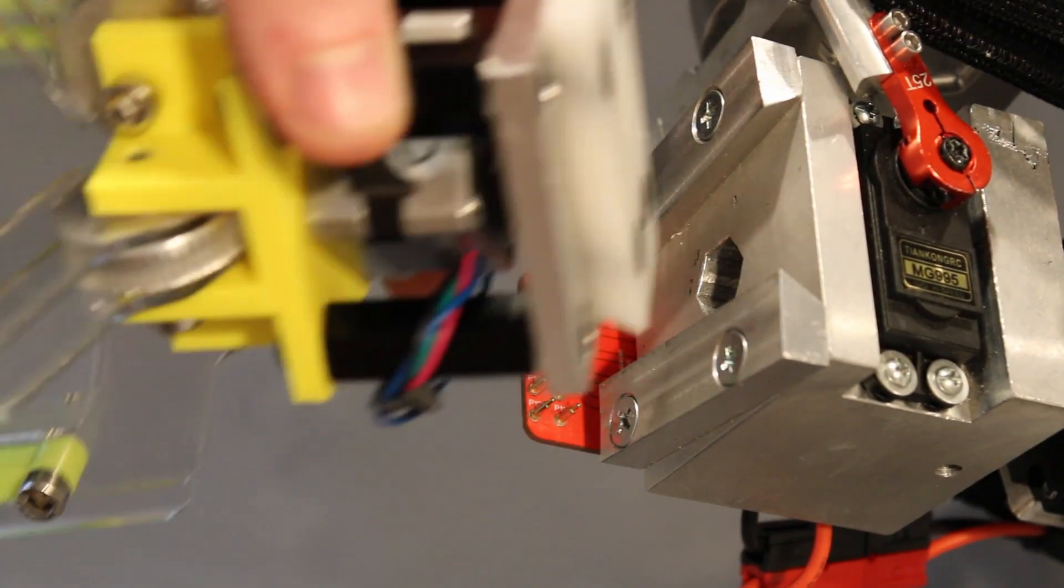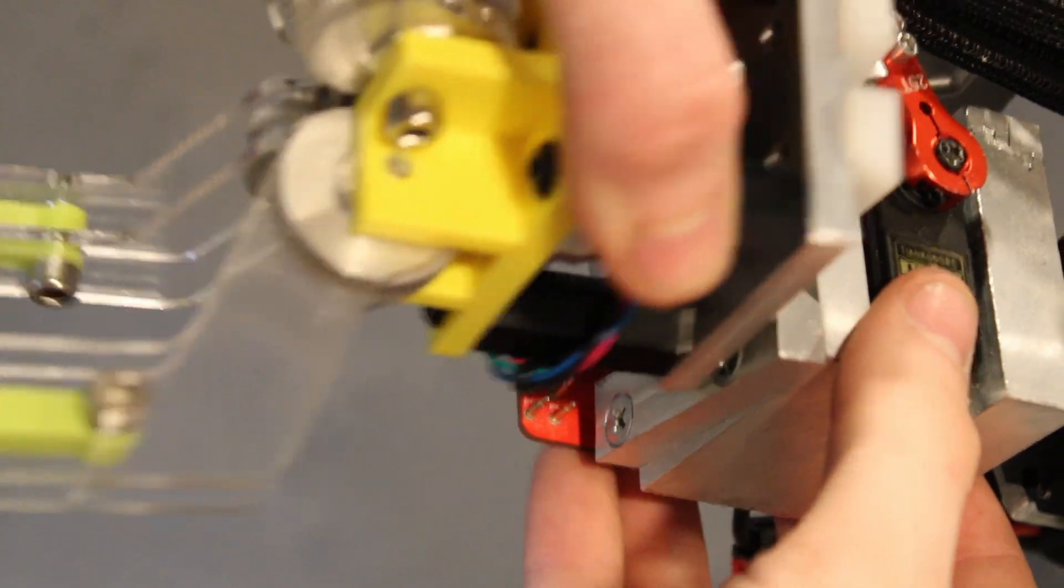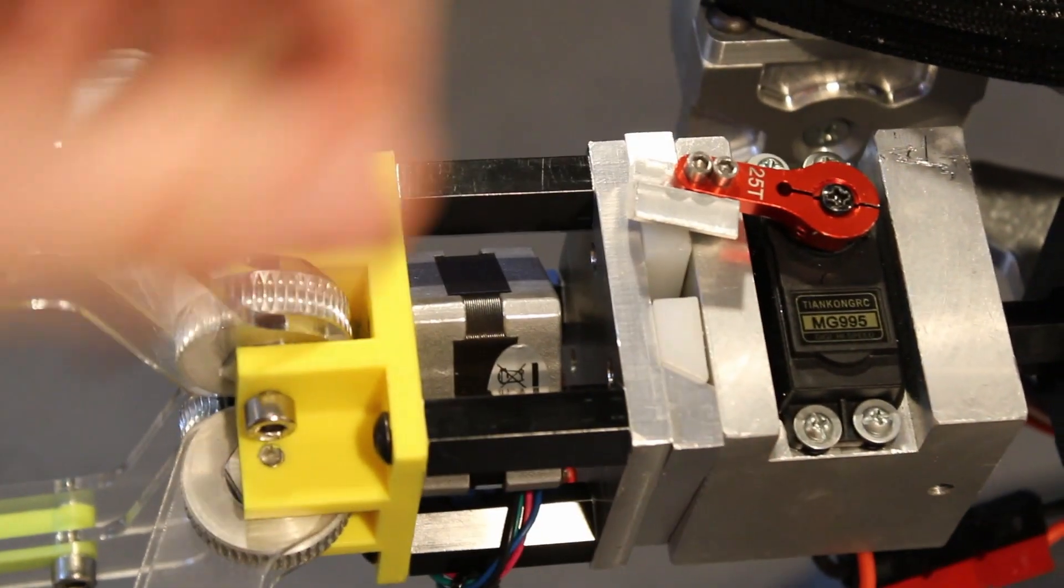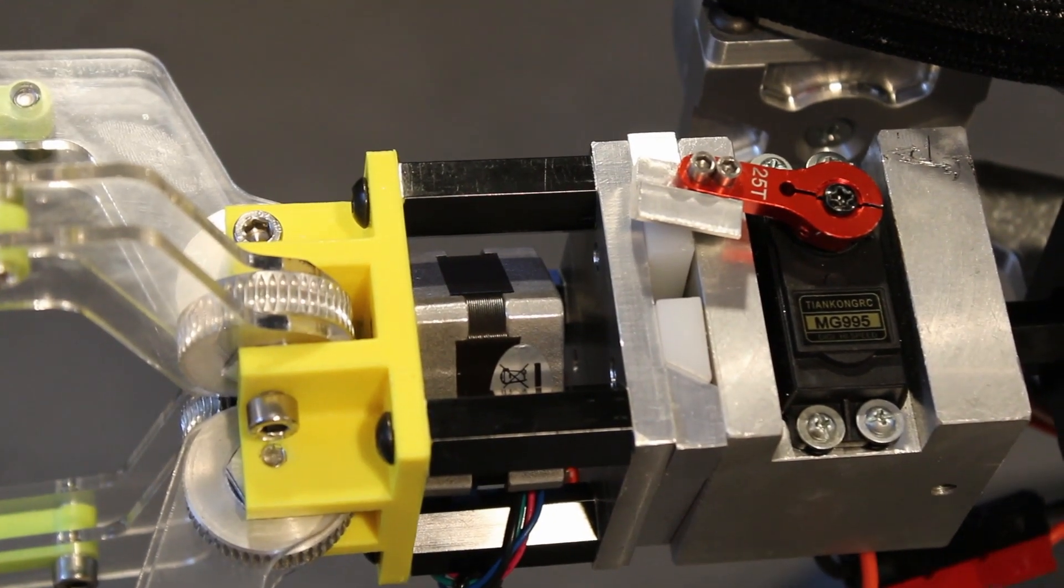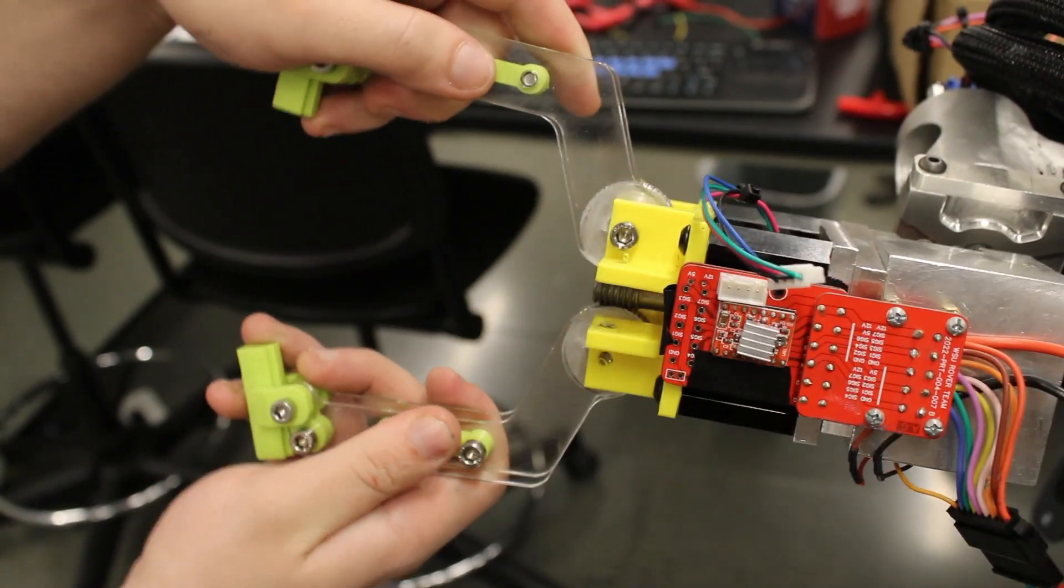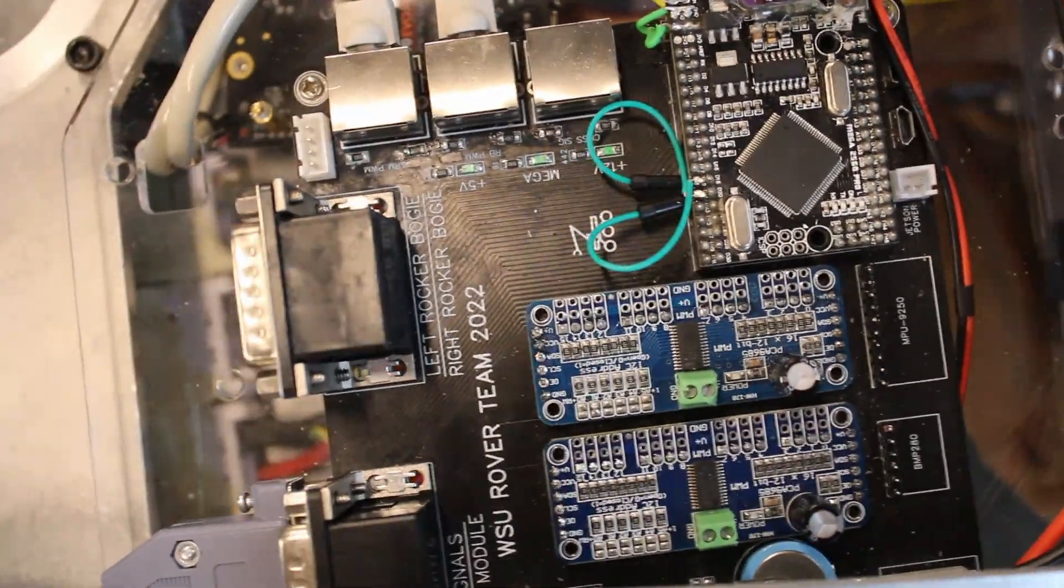In order to accomplish the variety of missions that the rover must achieve during its time at competition, we have designed a tool change system for the end of our arm. This allows us to mount a basic claw for grasping and pulling objectives, an auger for soil collection, and a screwdriver for removing the screws on the lander.